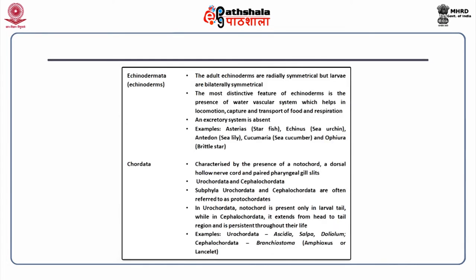Phylum echinodermata: adult echinoderms are radially symmetrical but larvae are bilaterally symmetrical. The most distinctive feature is the presence of the water vascular system, which helps in locomotion, capture and transport of food, and respiration. An excretory system is absent. Examples include asterias, echinus, antedon, cucumaria and ophiura.